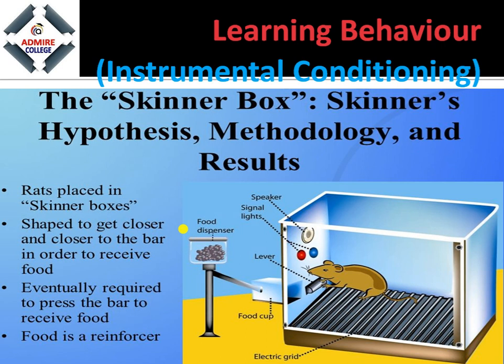Next is instrumental conditioning, designed by Skinner. He placed a rat in a box with a lever inside. Pressing the lever would cause food to appear. The rat accidentally pressed the lever and food came into the box. From this, the rat learned that pressing the lever produces food. This type of behavior is called instrumental conditioning behavior.